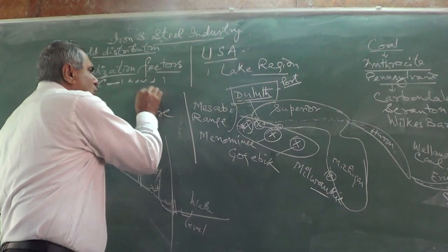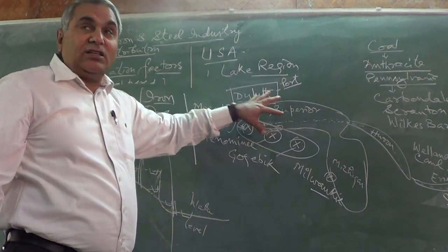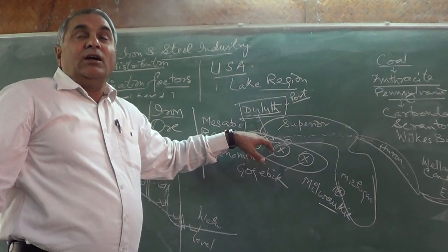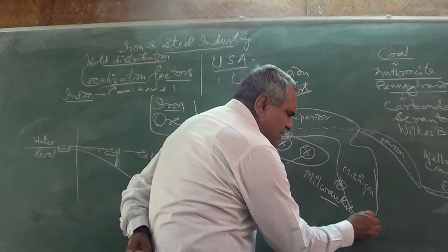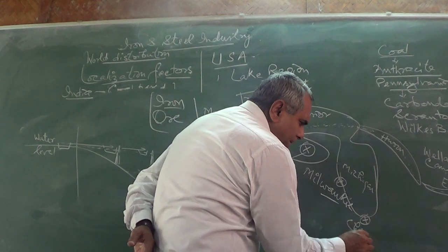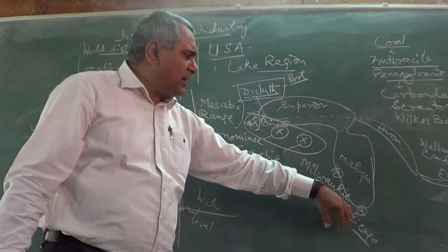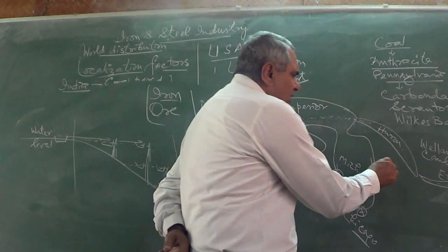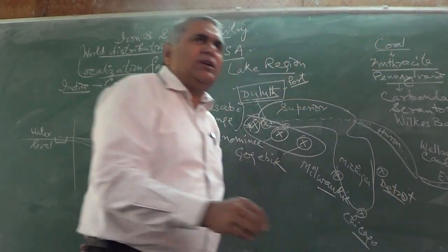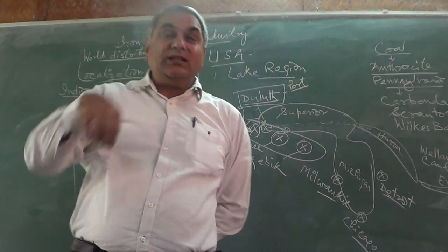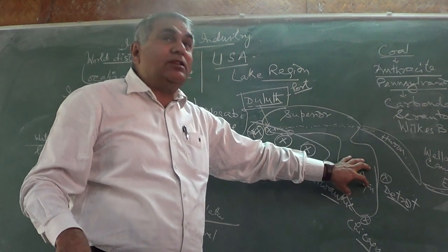The lake region is industrialized because iron ore is present, navigation is available, and mechanization has overcome adverse climate and low population density. Apart from that, there is the city of Chicago — a major industrial town and the largest market for iron and steel manufactured here. There is also Detroit, once known as the automobile capital of the world, very close to Chicago and Milwaukee.